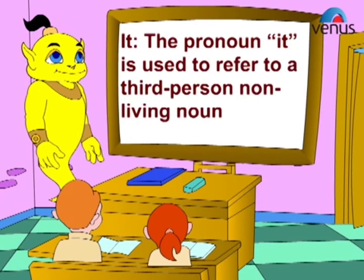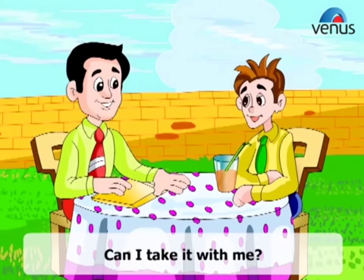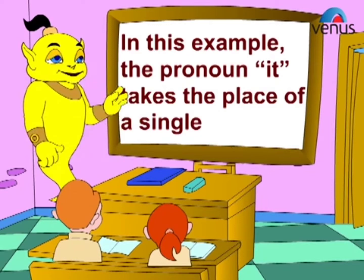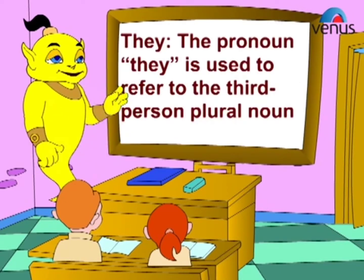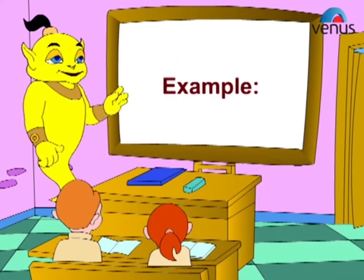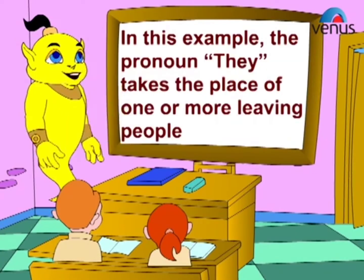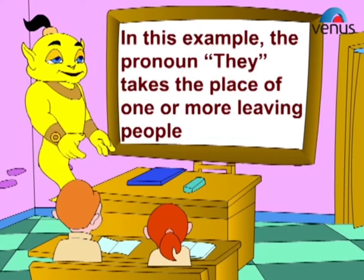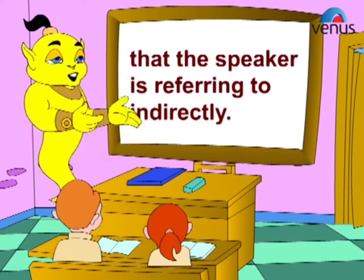The pronoun 'it' is used to refer to a third-person non-living noun. Example: Can I take it with me? In this example, the pronoun 'it' takes the place of a single non-living noun. The pronoun 'they' is used to refer to a third-person plural noun. Example: They are going to the beach this weekend. In this example, the pronoun 'they' takes the place of one or more living people that the speaker is referring to indirectly.